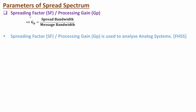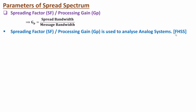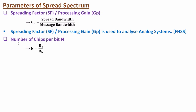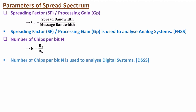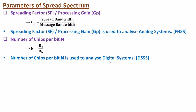The spreading factor is used in analog systems like Frequency Hopping Spread Spectrum. For digital systems, we use the number of chips per bit, denoted as capital N. N equals Rc divided by Rb, where Rb is the data rate of the message and Rc is the chip data rate. The transmitted data rate is higher than the actual message data rate, and N defines how much increase in data rate there is. This is used to analyze digital systems like DSSS, Direct Sequence Spread Spectrum.